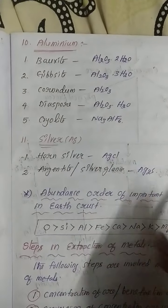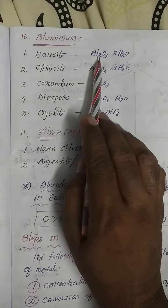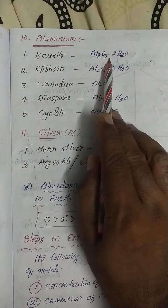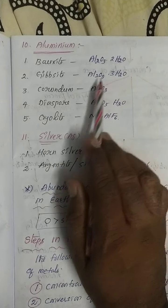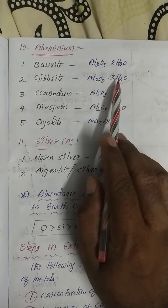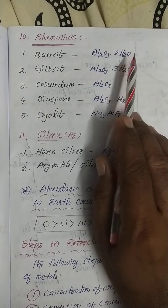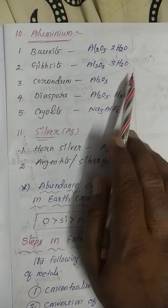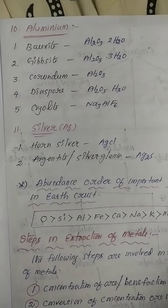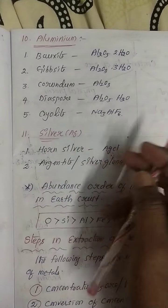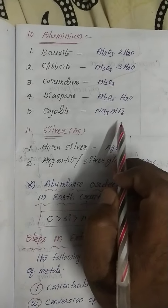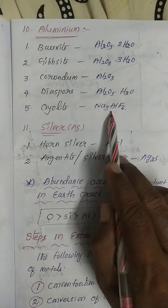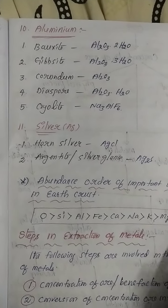The last two metals are aluminium and silver. For aluminium: bauxite is Al₂O₃·2H₂O, gibbsite is Al₂O₃·3H₂O, and corundum is Al₂O₃. If a compound has water molecules it is a hydrated compound — bauxite and gibbsite are hydrated, but corundum is anhydrous. Also diaspore (Al₂O₃·H₂O) and cryolite (Na₃AlF₆). These are the important aluminium minerals and ores.